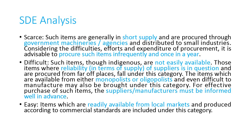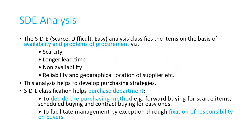In SDE analysis, S stands for scarce — not easily available, in very short supply, mostly procured through government agencies. For scarce items, procurement should be done only once a year. D stands for difficult — not easily available, often from monopoly or oligopoly suppliers who must be informed well in advance. E stands for easy — items readily available in the local market. This SDE classification helps the purchase department decide the purchasing method to facilitate management.